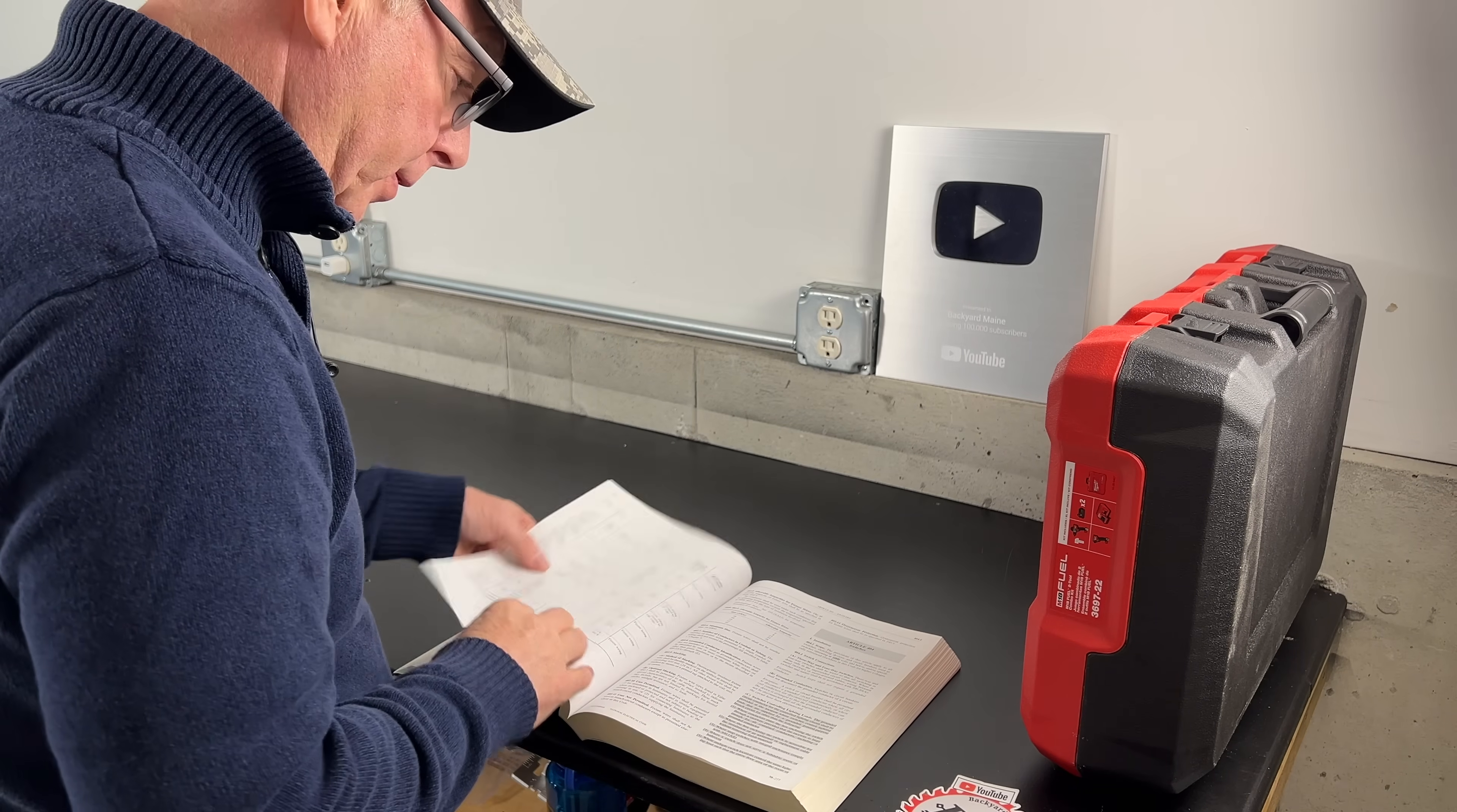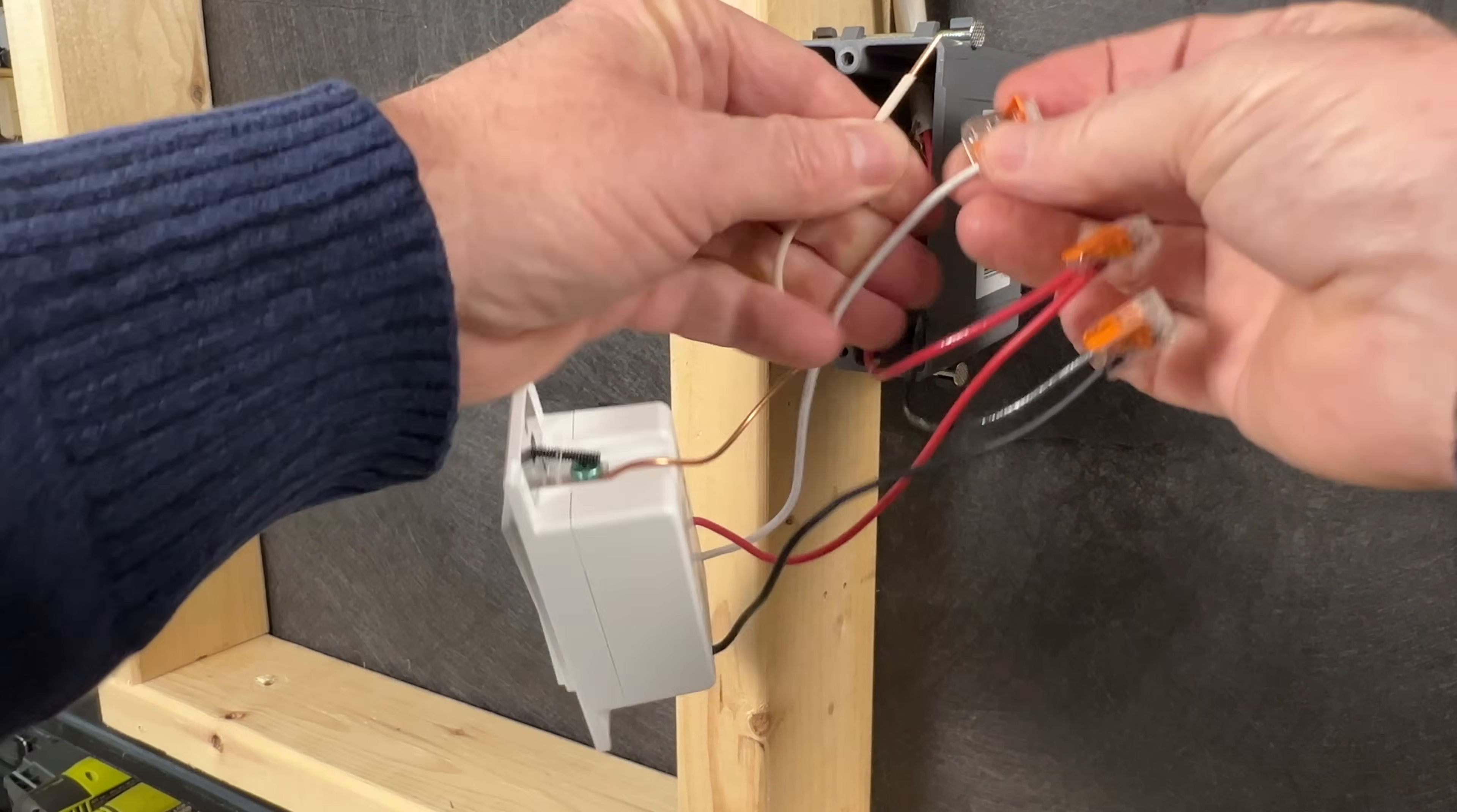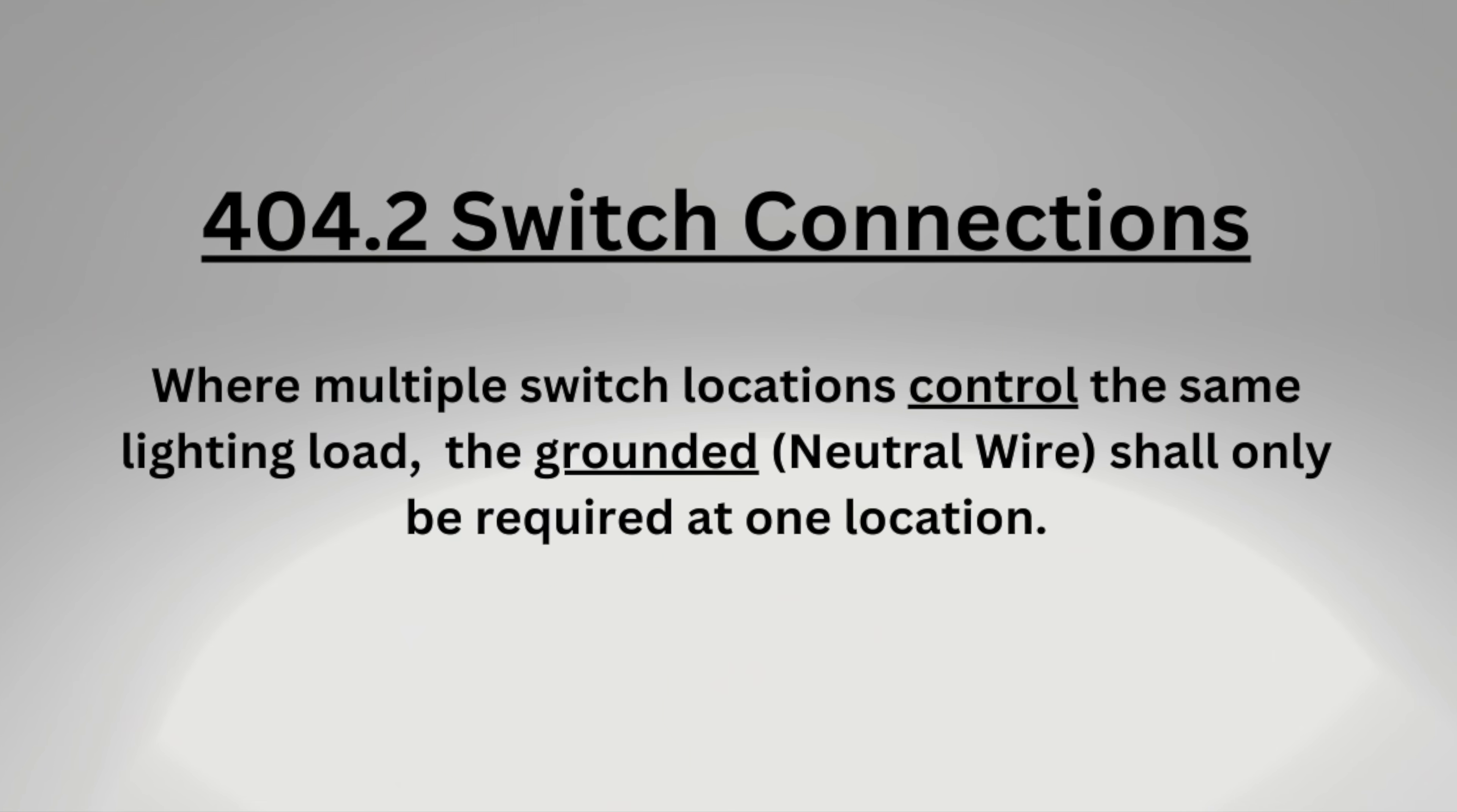Let's go to the code book. All the way back in 2011 article 404.2 of the NEC was updated to require a neutral conductor at light switches. The reason for the update was many new lighting controls and smart switches were being introduced which required a neutral wire to keep the electronics functioning. But article 404.2 also states that where multiple switches control the same lights a neutral wire is only required at one of the switches. So this means with three-way and four-way switches at least one of them will require a neutral conductor making the California three-way an obsolete method.